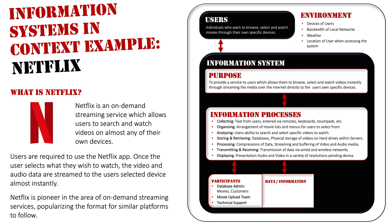In the areas of data and information: data would be the user text and voice input. Some remotes allow you to talk into them and Netflix will do a search or find a movie for you, while other people input text with keyboards or touchpads. That's all the data going into the system, allowing you to select movies. The information coming out is the streamed audio and video — when you're watching TV shows or movies, seeing the picture on screen and hearing the audio from your TV or phone speakers. That is the output of the system: information being streamed to you from Netflix's servers.